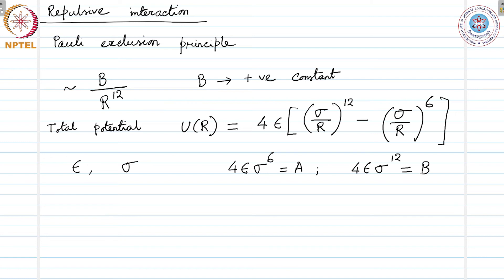If we want to plot this interaction, we plot it like this: this is r, this is the potential as a function of r. Looking at this expression, we can plot it this way.